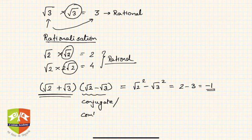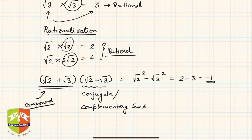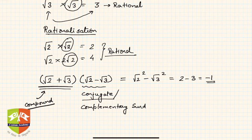The conjugate surd is also called the complementary surd. So when you have a compound surd and you want to find which other surd, when multiplied with it, will give a rational number — that multiplying surd is called the conjugate or complementary surd. Every compound surd has a conjugate surd.